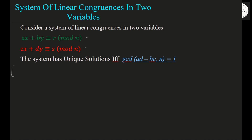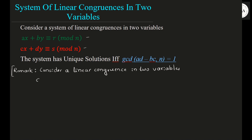Before we discuss this, let me explain one thing. Consider it as a remark. Consider a linear congruence in two variables. What is that equation? We consider it as Ax plus By congruent to C mod n.